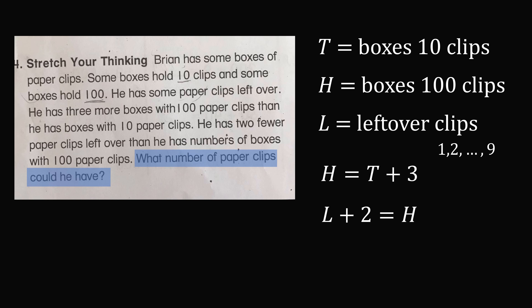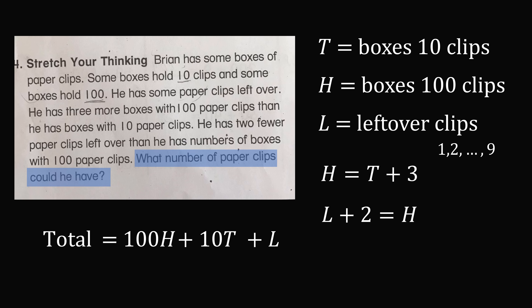So finally we need to calculate the number of paper clips he could have. This could be more than one answer, but let's figure out a single answer. The total number of paper clips will be equal to 100 times the number of boxes with 100 clips, plus 10 times the number of boxes with 10 clips, plus the leftover clips. So the total equals 100H plus 10T plus L.